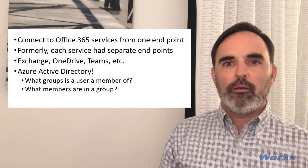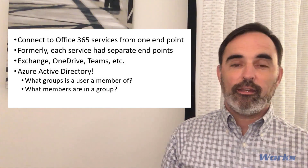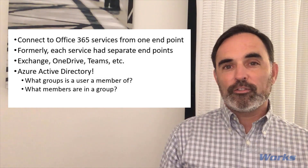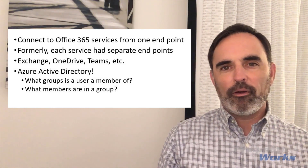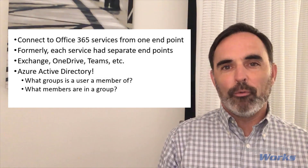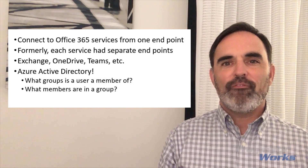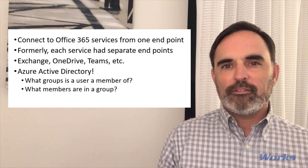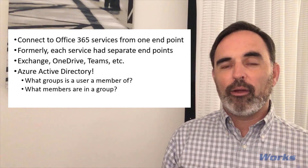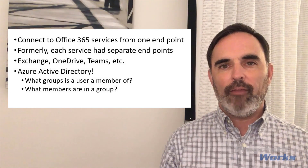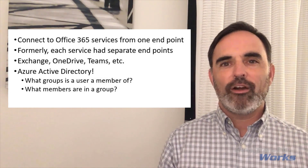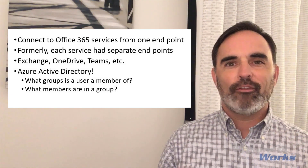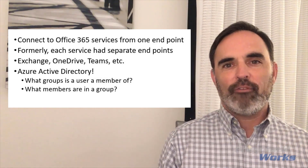One particular case we've found useful at Pragmatic Works is using Graph to connect to Azure Active Directory. This is handy if I want to find the groups that a person is a member of, or given a group name, find who the members are. We found this particularly useful with Power Apps — based on the login of the person using the app, we can see what groups they're part of and apply security to show or hide functionality within the app based on group membership in Azure Active Directory.